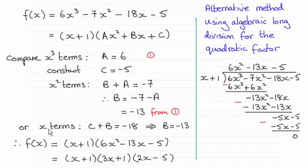The alternative way then was to compare the x terms. If you do that, you get an x term when you multiply x with the c and 1 with the b. So c + b must give us the -18.